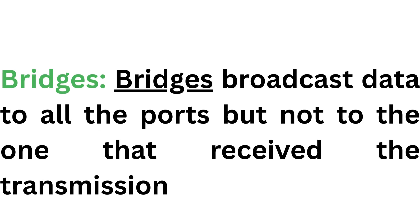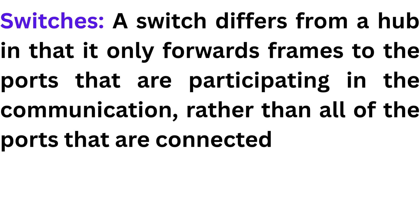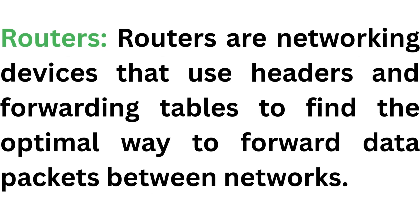A hub broadcasts data to all ports except the one that received the transmission. Bridges, on the other hand, learn which MAC addresses are reachable on specific ports rather than copying messages to all ports like hubs do. Switches differ from a hub in that they only forward frames to the ports participating in the communication. Routers are networking devices that use headers and forwarding tables to find the optimal way to forward data packets between networks.